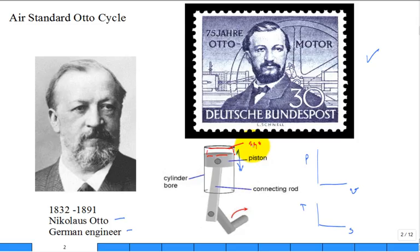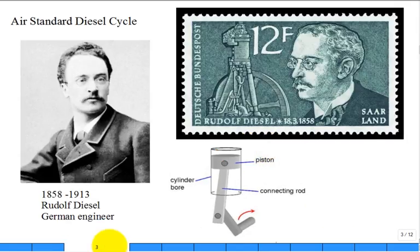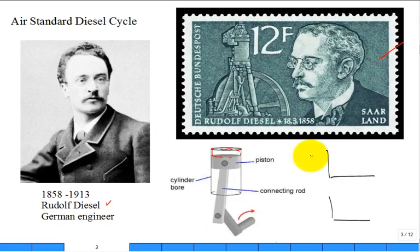We also studied the Diesel cycle — named after another engineer honored with a postage stamp — where a piston reciprocates back and forth. The key difference: the Otto cycle has constant-volume heat addition, while the Diesel cycle has constant-pressure heat addition. Both use closed system analysis focused on that trapped amount of pure air. You should be able to generate both TS and PV diagrams, recalling each of the four processes.